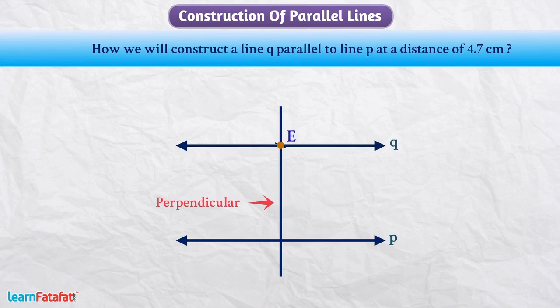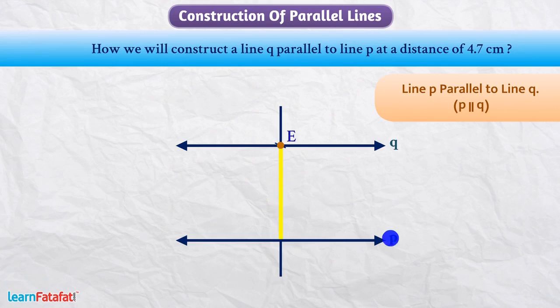In this way, we have constructed line P parallel to line Q. If we measure the distance between line P and line Q, it will be 4.7 cm. Therefore, we can say that line Q and line P are at distance of 4.7 cm.